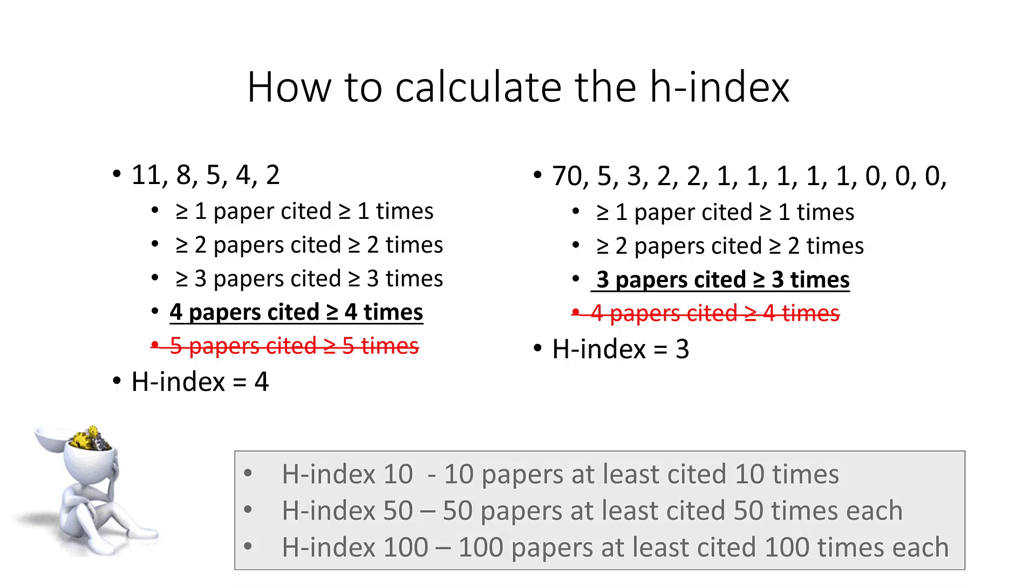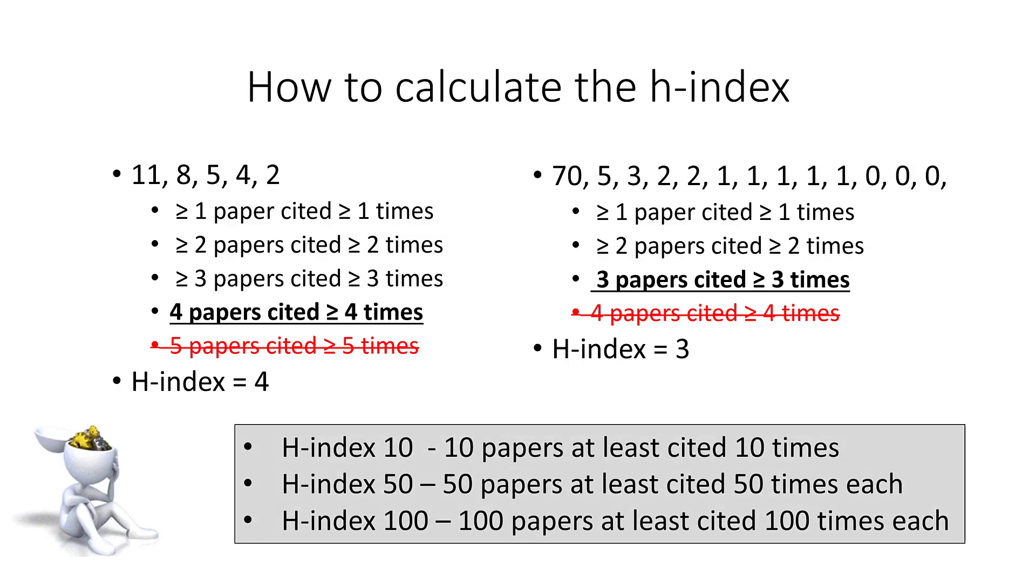So, if you have an H-Index of 10, this means that you have 10 papers cited at least 10 times each. 50 means 50 papers cited at least 50 times each, and an H-Index of 100 means that you have 100 papers cited at least 100 times each.